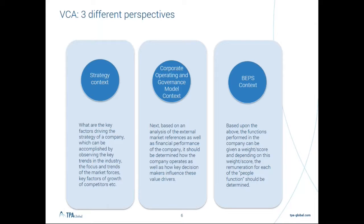Value chain analysis is not a new concept; it has been used in various ways — in strategy context and corporate operating and governance model context. In the strategy context, you look at key value-driving activities in the whole industry and match whether your MNE has similar key value-driving activities. If there is a mismatch, that can be a trigger point for the company to revisit its value chain or identify where it may be lacking efficiency. From a corporate operating and governance model context, you analyze how well your company has performed using the operating model that has been in place, and identify mismatches or departments that are loss-making.